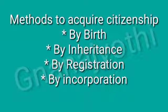Now let us view the methods of acquiring citizenship. First is by birth — any person who takes birth in any country acquires the citizenship of that country naturally. Second is by inheritance — in this method, an individual gets citizenship on the basis of the nationality of his or her parents.